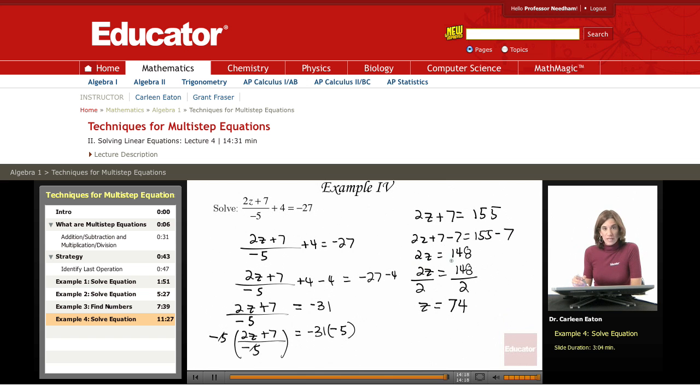Which is 2z equals 148, divide both sides by 2. And finally, you've solved the equation, z equals 74.